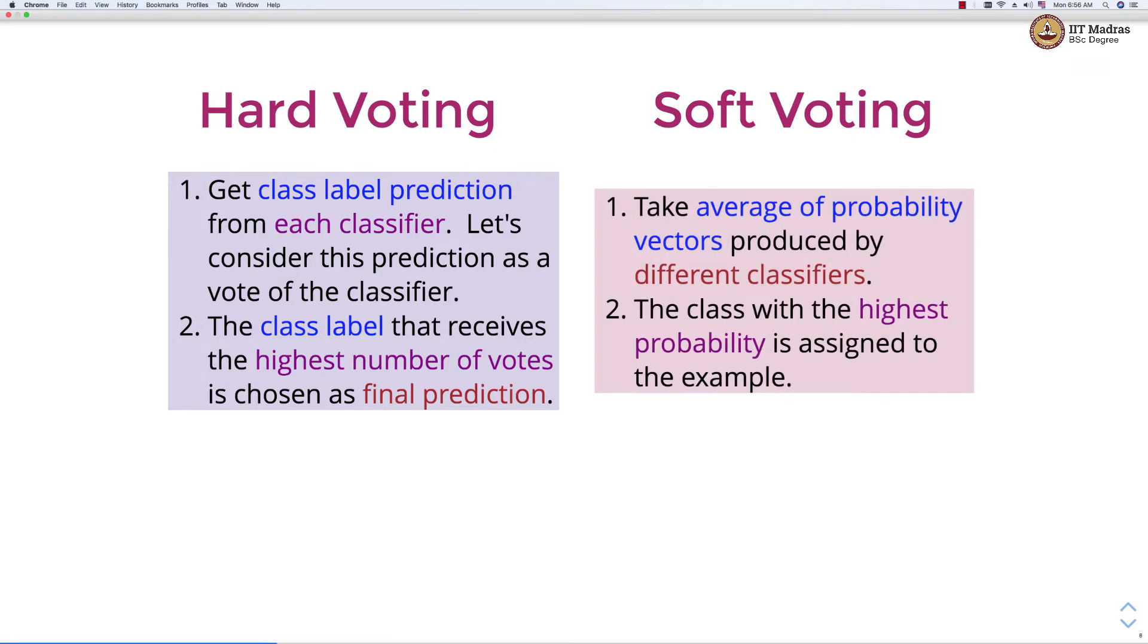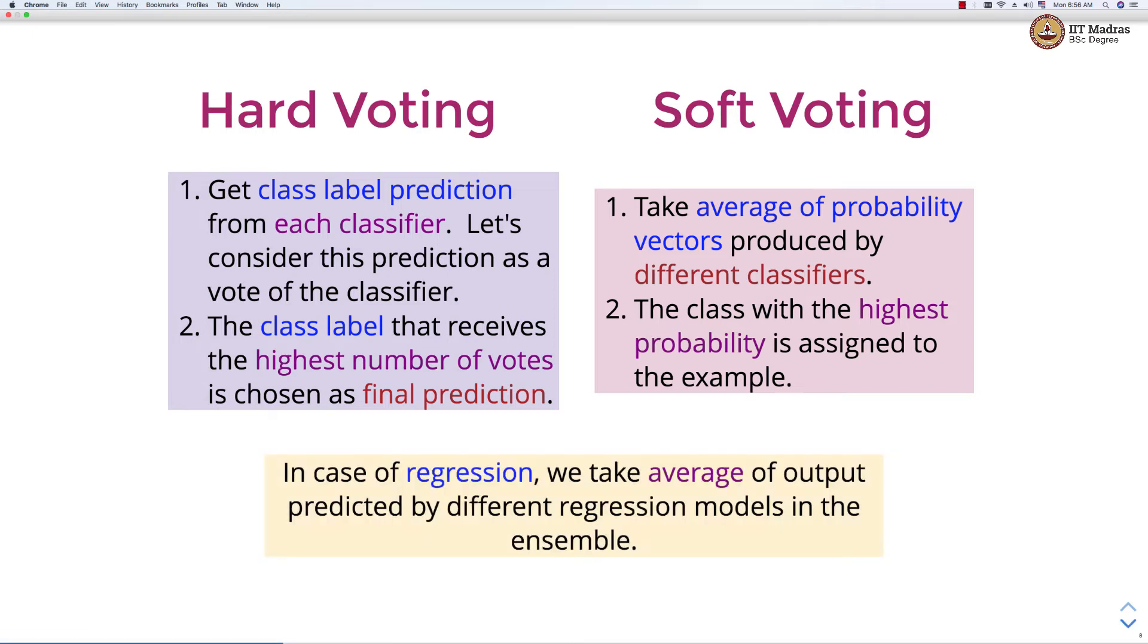Whereas in soft voting, we take average of probability vectors produced by different classifiers. The class with the highest probability is assigned to the example. In case of regression, we take average of output predicted by different regression models in the ensemble.